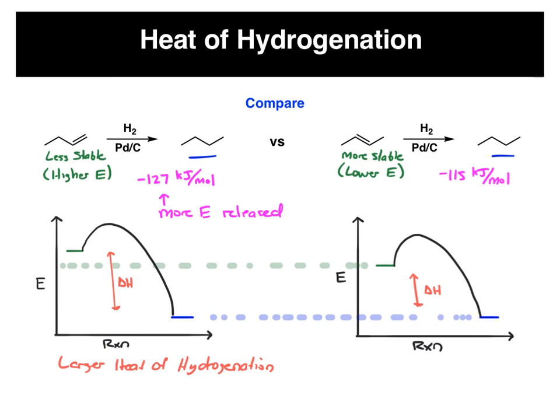So in summary, the take home message here is that less stable double bonds will have larger heats of hydrogenation.